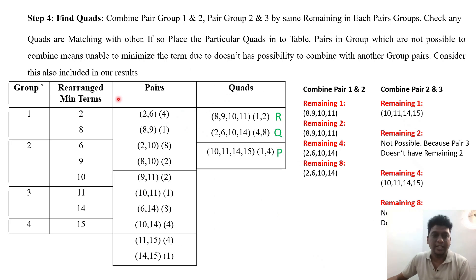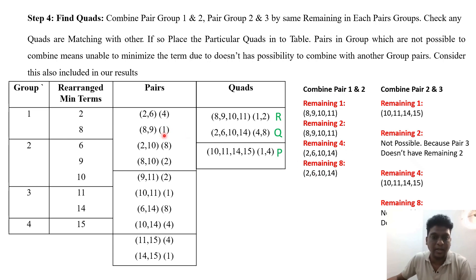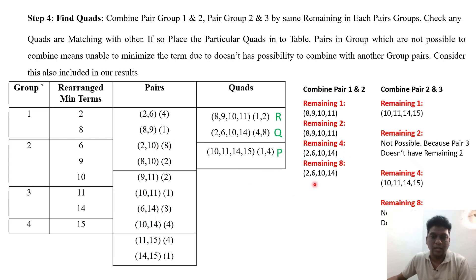In Step 4 we find the quads by comparing pairs from adjacent groups. We add an extra column for quads and compare remainders. For remainder 1: combining (8,9) and (10,11) gives the quad 8,9,10,11. For remainder 2: combining (8,10) and (9,11) also gives 8,9,10,11. For remainder 4: combining (2,6) and (10,14) gives 2,6,10,14. For remainder 8: combining (2,10) and (6,14) also gives 2,6,10,14.